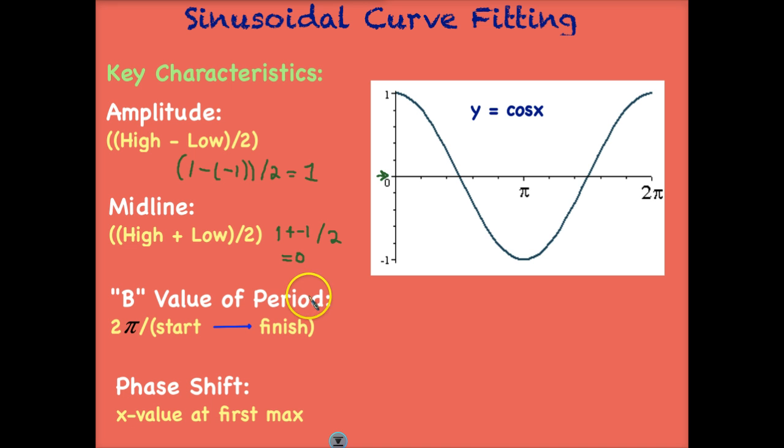How about our B value of the period? Remember that when we have a transformed graph it looks something like this: Y equals A cosine B X minus C plus D. So we're looking for this B value. The B value in and of itself isn't necessarily the period. So what we do is we take the start which if we look right here is 0 and we take the end which is at 2 pi.